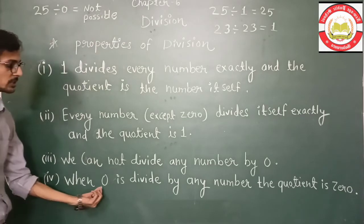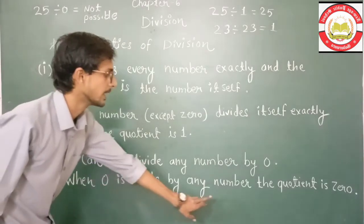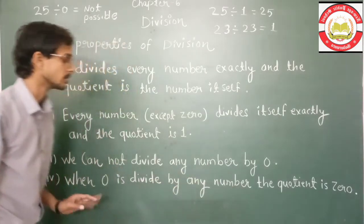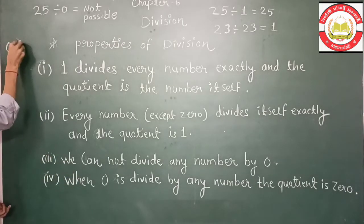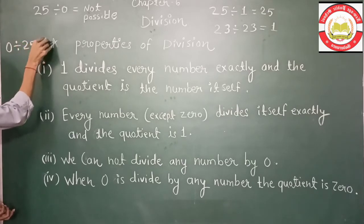Last property is, when zero is divided by any number, the quotient is zero.